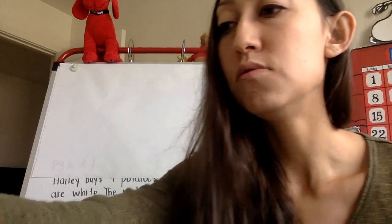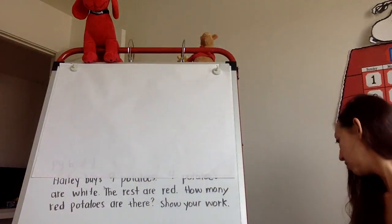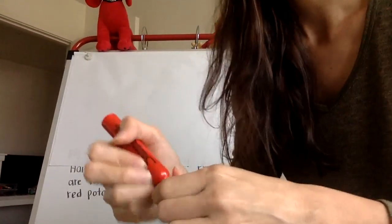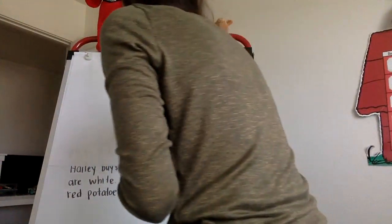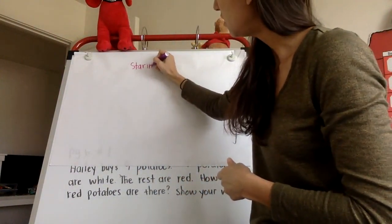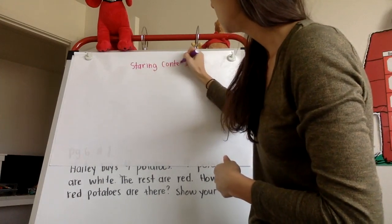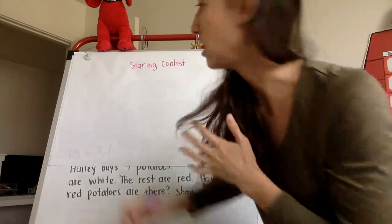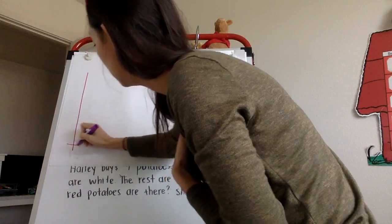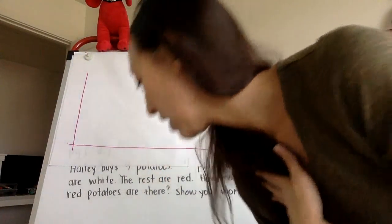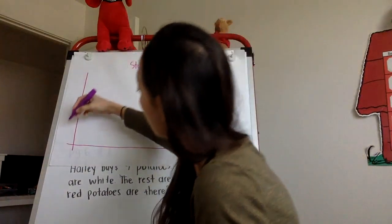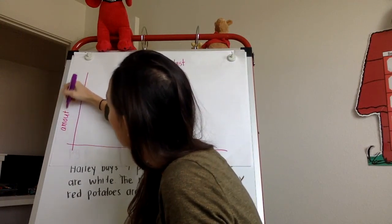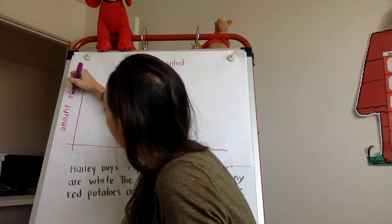You are going to start with a title. All bar graphs must have a title. So I'm going to call it the staring contest. Another feature of bar graphs is that you must have a y-axis and x-axis. So here's my y-axis, here's my x-axis.